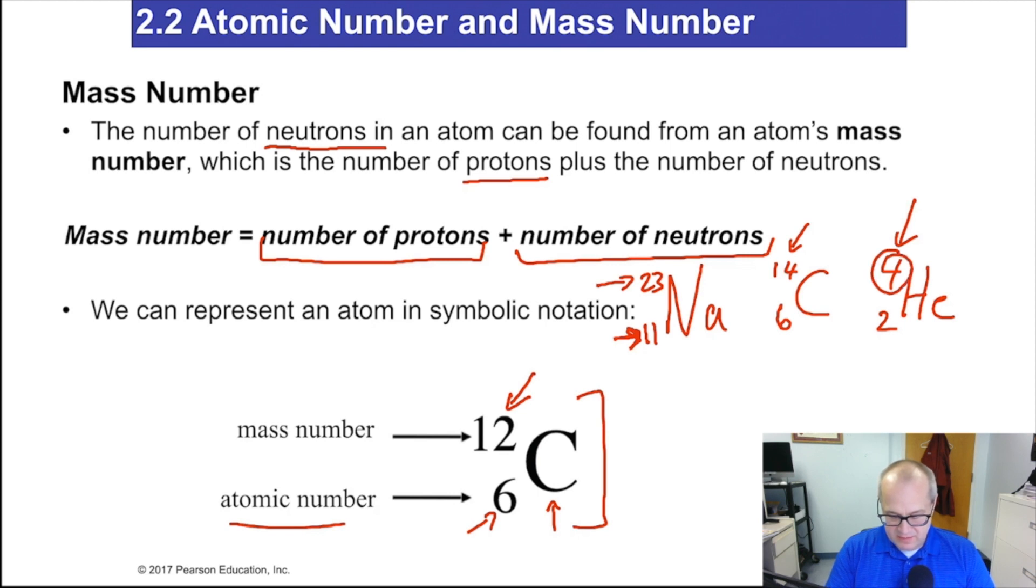These are mass numbers. And a mass number is the number of protons plus the number of neutrons. You might want to write that down.